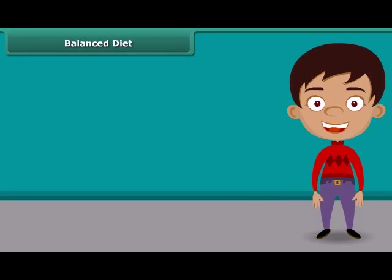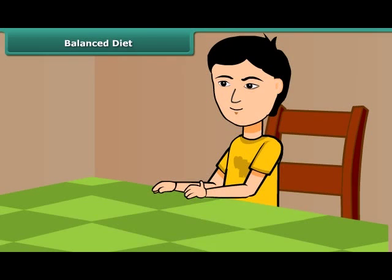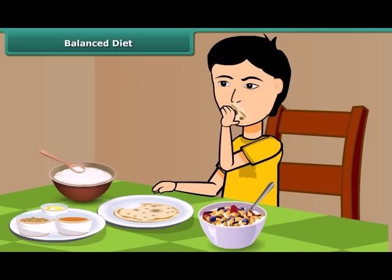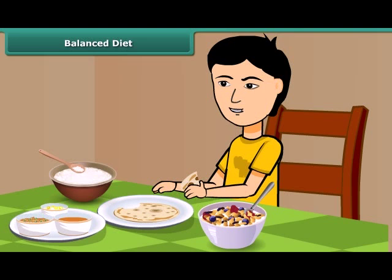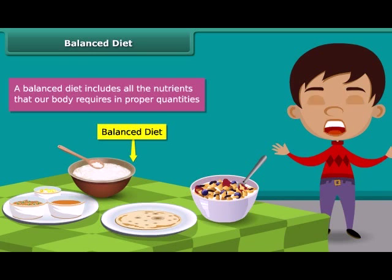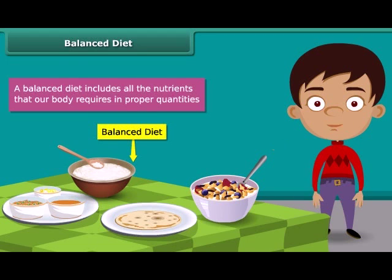As we know, all kinds of foods do not contain all the components. Our meals should have a balance of the different nutrients that our body needs for growing and maintaining good health. Such a diet is called a balanced diet. In other words, a balanced diet includes all the nutrients that our body requires in proper quantities. So we should accept the fact that having a balanced diet is the best way to live a healthy life.